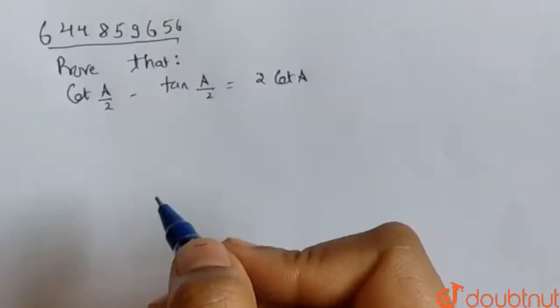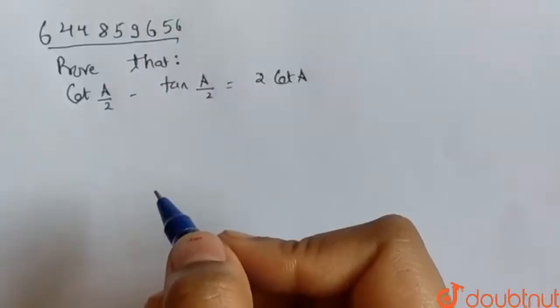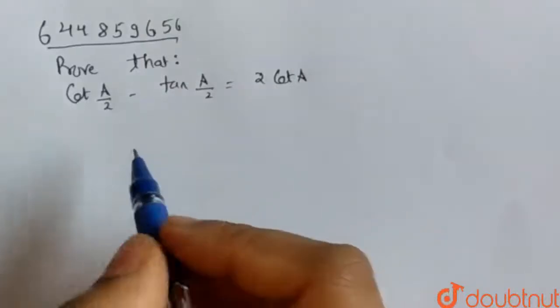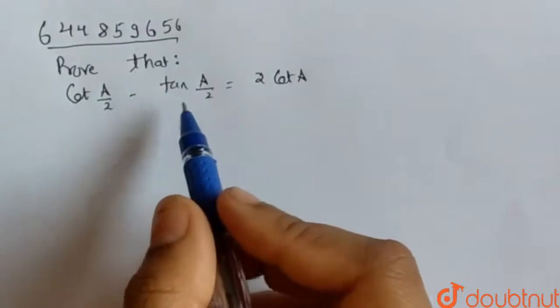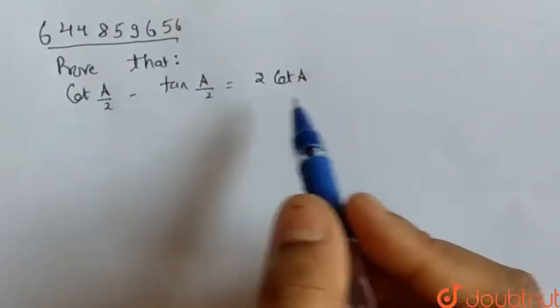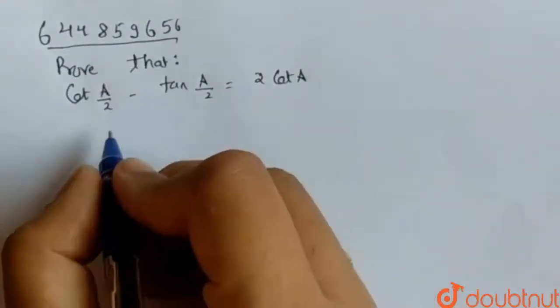Hello friends, today's question is: prove that cot(a/2) minus tan(a/2) is equal to 2 cot(a).